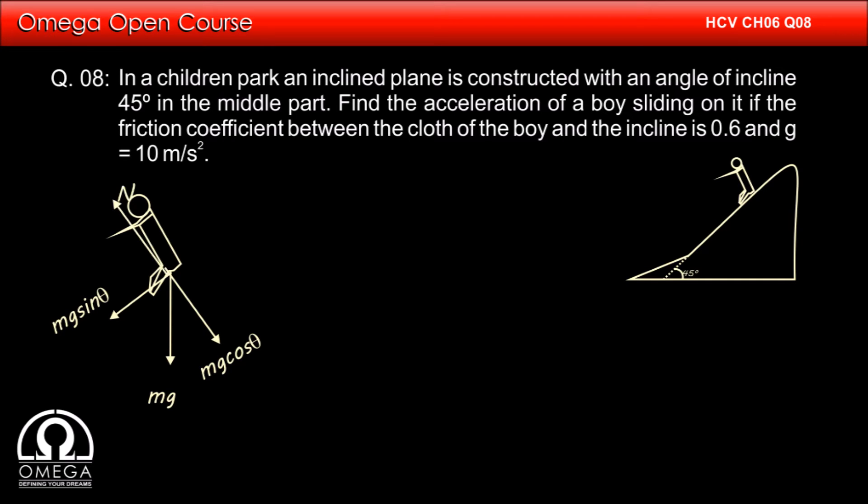The incline is pushing the boy with normal contact force, say n, in the direction perpendicular to the surface of the incline. Finally, frictional force of mu times n is acting up along the incline.